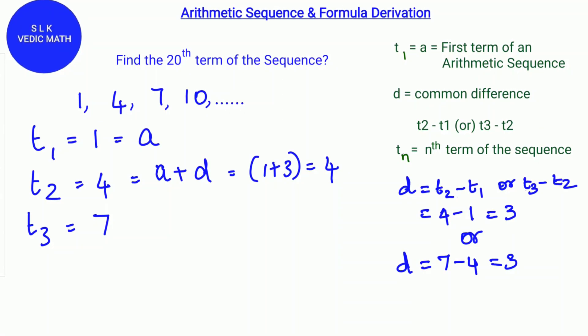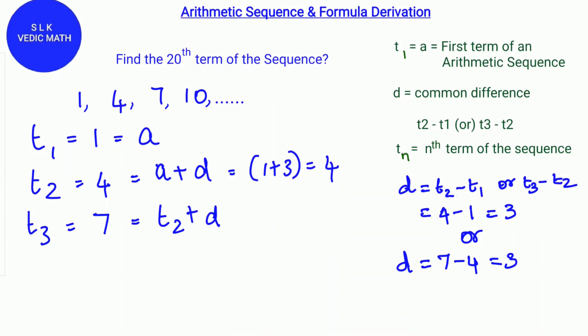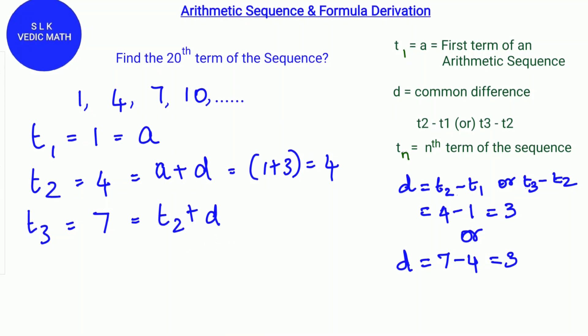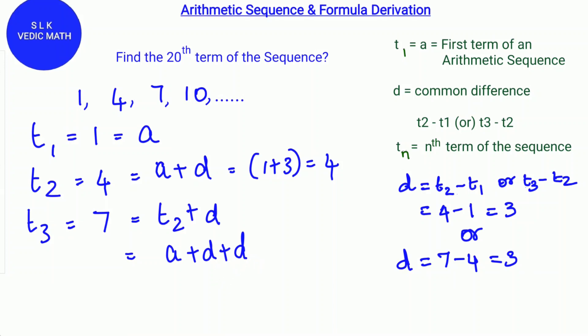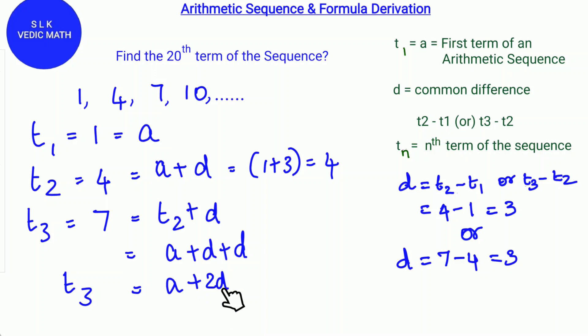For T3, it's T2 plus d. We substitute a plus d over here. So it's a plus d plus d. So T3 is a plus 2d.